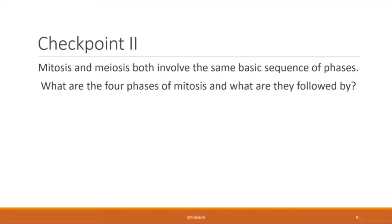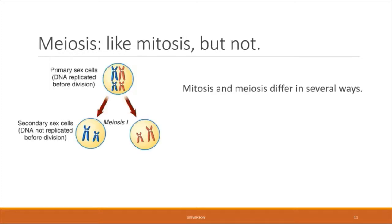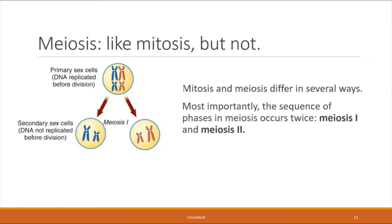One thing that makes meiosis a nice follow-up to mitosis is that both processes involve the same basic sequence of phases. Although the basic sequence is the same, the two processes are also different in several ways. The most important difference is that that sequence of four phases occurs two separate times over the course of meiosis.